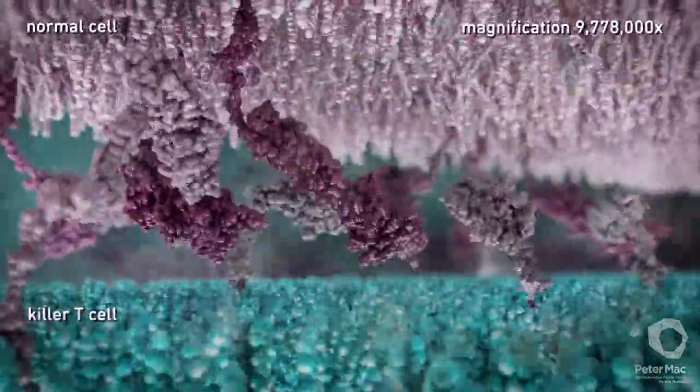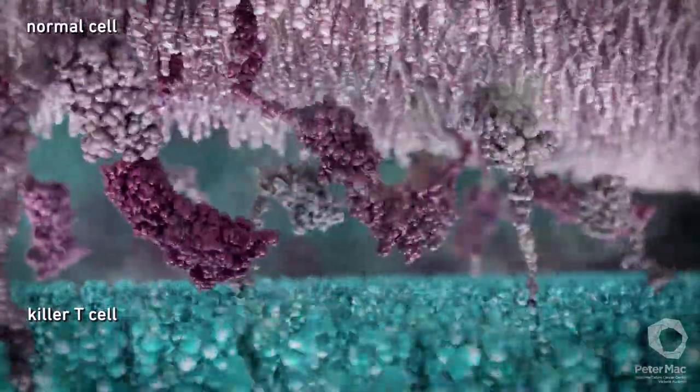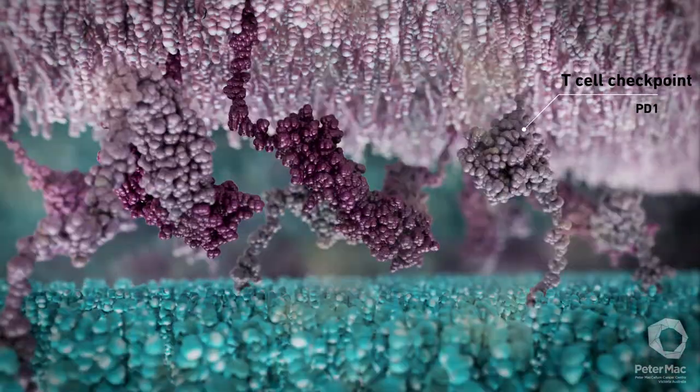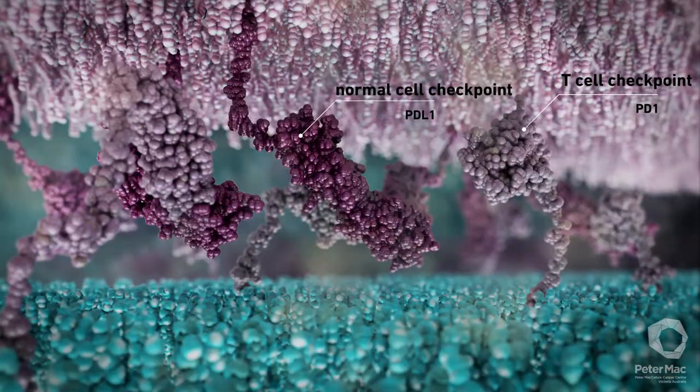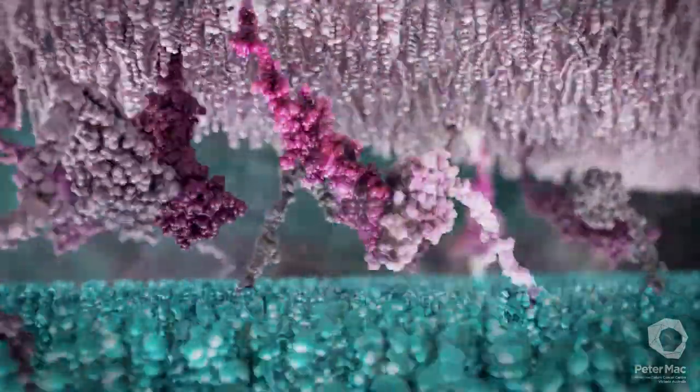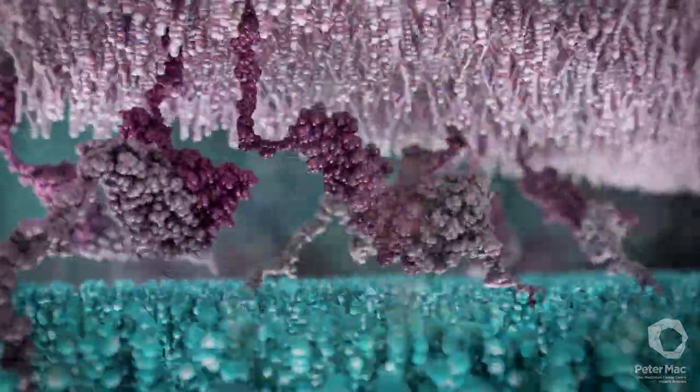Here are some different killer T cell surface receptors. Killer T cells can also differentiate between normal and abnormal cells by using surface checkpoint molecules to look for matching checkpoints on other cells to which it can bind. Once bound, the other cell is seen as normal and won't be harmed by the killer T cell.